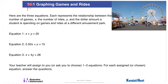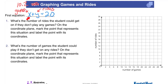Going on to 10.2, we're going to be looking at three different equations. We're going to focus on equations 1 and 2 together. These are looking at equations dealing with games and rides at an amusement park and how much money we're going to spend. The first equation we're looking at is x plus y equals 20, where x represents the number of games we play and y represents the number of rides.